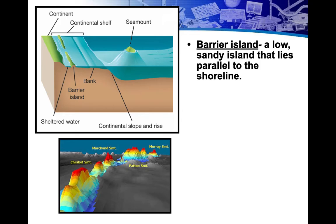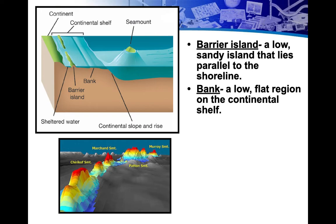Other features include barrier islands — low sandy islands that lie parallel to the shoreline. You can see one in the upper right corner: that green area is a barrier island. They form naturally from wave action and act as natural breakwaters for the land behind them. Banks are low, flat regions on the continental shelf — you may have heard of them as great fishing locations.